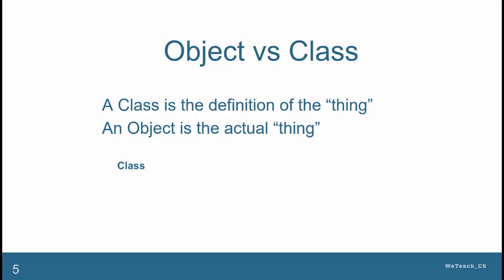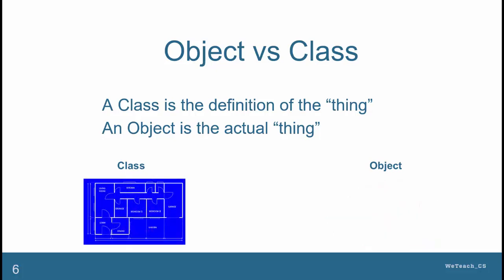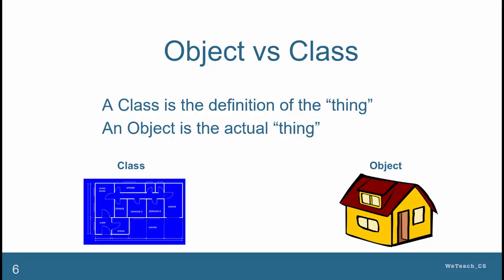For example, the recipe for a meal would be the class, and the meal itself would be the object. Or, the blueprints for a house would be the class, and the house itself would be the object.